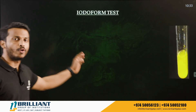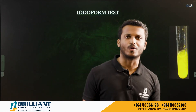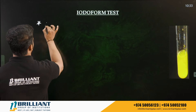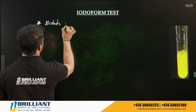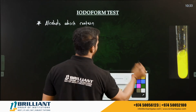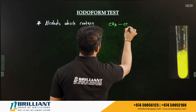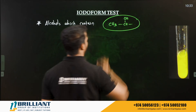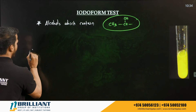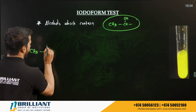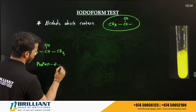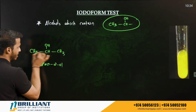The last test is the iodoform test, which we also discussed in the aldehyde-ketone chapter. In the alcohol chapter, iodoform test is given by alcohols that contain the special group CH₃CHOH. For example, propan-2-ol (CH₃CHOH–CH₃) has this group and can give the iodoform test.